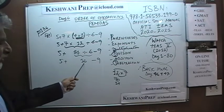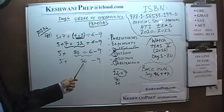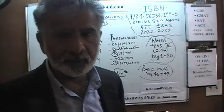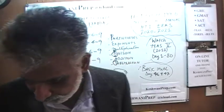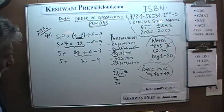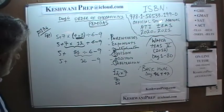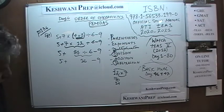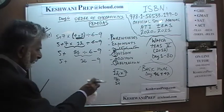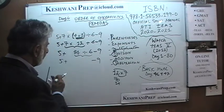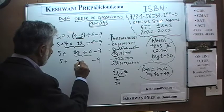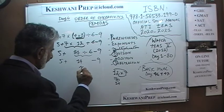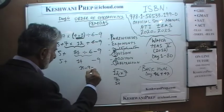5 plus 14 is 19, and 19 minus 9 is 10. That was number 4.